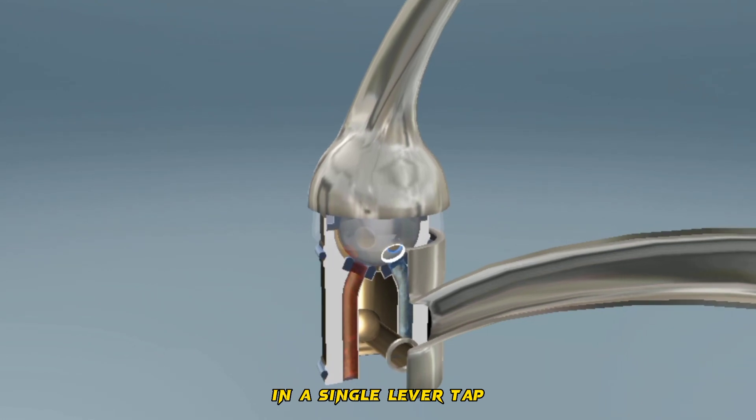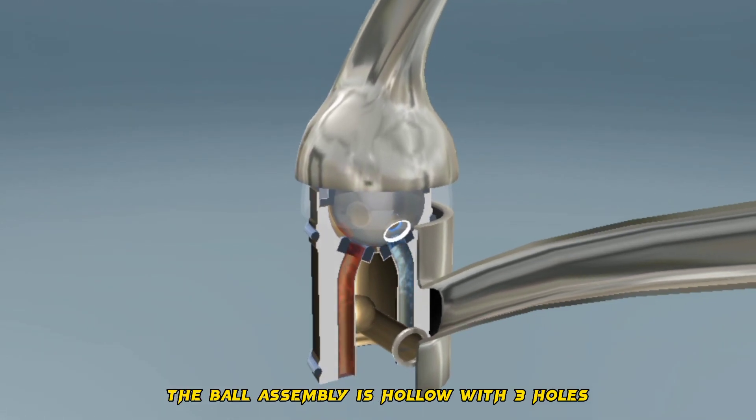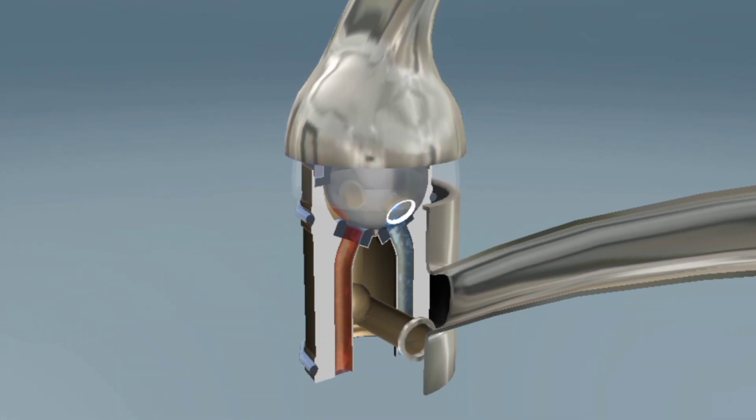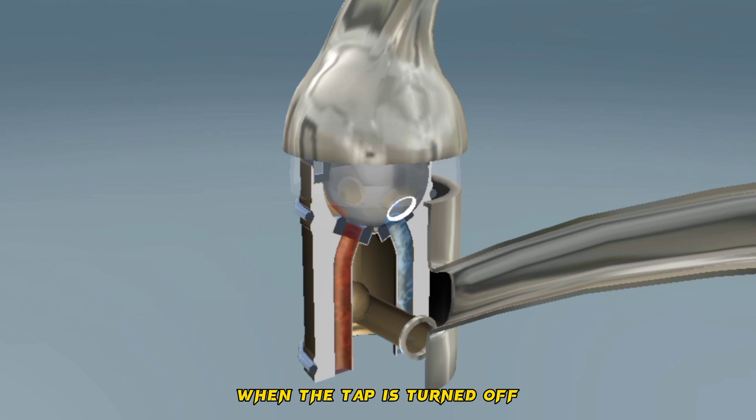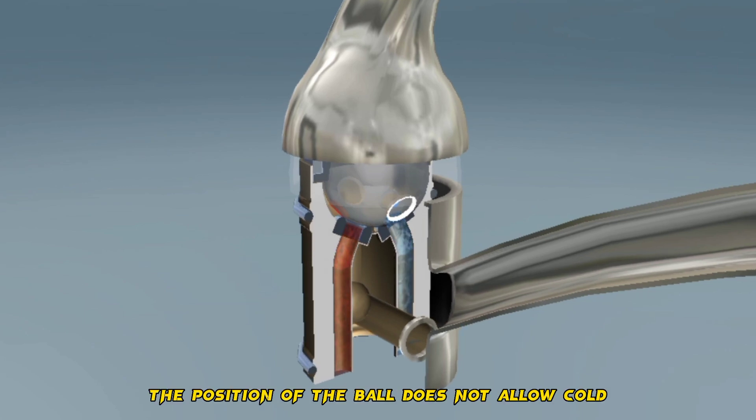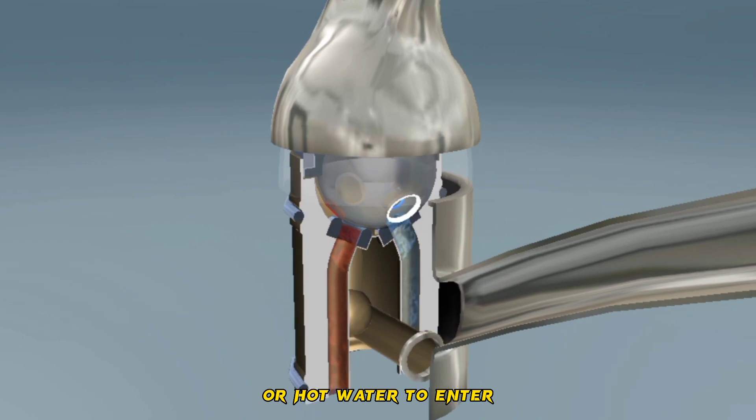In a single lever tap, the ball assembly is hollow, with three holes. Cold and hot water enter through these holes, and the mixed water flows out through the third one. When the tap is turned off, the position of the ball does not allow cold or hot water to enter.